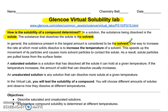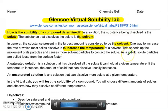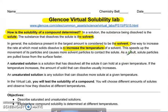One way to increase the rate at which most solids dissolve is to increase the temperature of a solvent. This speeds up the movement of its particles and causes more solvent particles to contact the solute. As a result, solute particles are pulled loose from the surface faster.